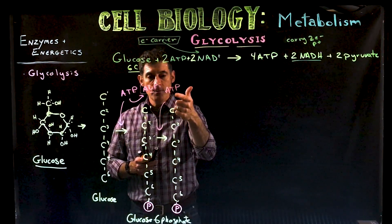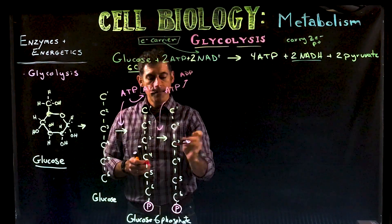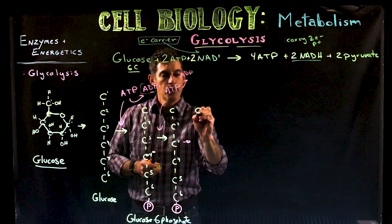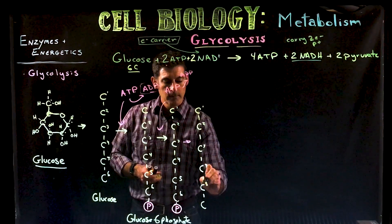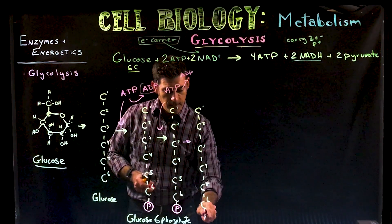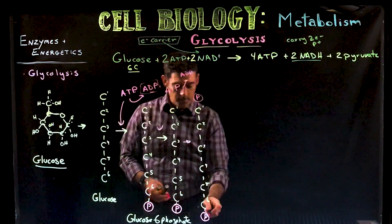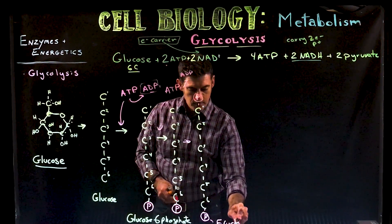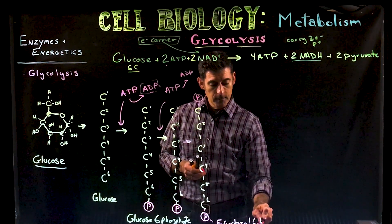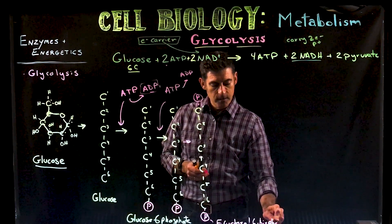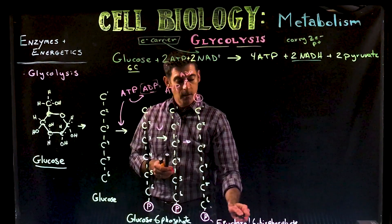In this reaction, another ATP is used: a phosphate is taken off the ATP, releasing ADP, and that phosphate is attached to the number one carbon of the fructose molecule. The resulting molecule is called fructose-1,6-bisphosphate — 'bis' for two, sometimes called diphosphate — because there's now a phosphate on carbon one and carbon six.